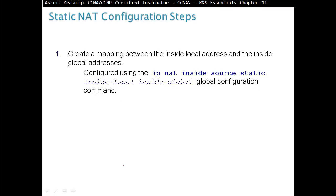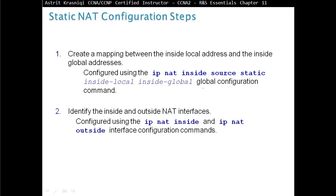To configure static NAT, create a mapping between the inside local and inside global address using the command: ip nat inside source static [inside-local-address] [inside-global-address]. This is a global configuration command. Then identify the interfaces: specify which interface is inside (pointing toward the internal network) and which is outside (pointing toward the external network), since the router needs to know which side is which.